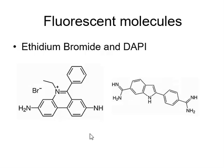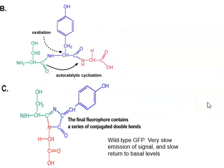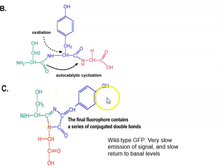This raises the question: how does a conjugated system occur in a protein, given that peptide bonds would normally prevent it? Green fluorescent protein is a long protein, but within it is a fluorophore active site made up of three amino acids. Upon activation — particularly under oxidation — a carbon and nitrogen link together to create a five-membered ring, generating a reasonable-sized conjugated system with the help of adjacent groups. This system can absorb blue light and emit green light.